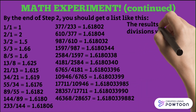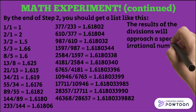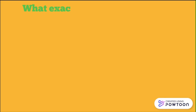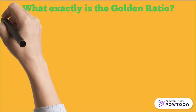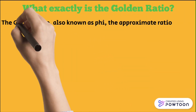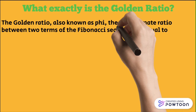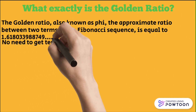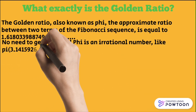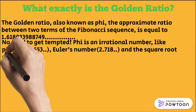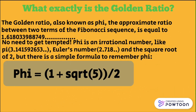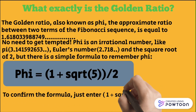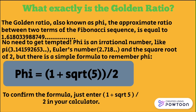The results of the divisions will approach a specific irrational number called the golden ratio. What exactly is the golden ratio? The golden ratio, also known as phi, is the approximate ratio between two terms of the Fibonacci sequence and is equal to 1.618033988749 and so on. Phi is an irrational number like pi, Euler's number, and the square root of 2. But there is a simple formula to remember phi: phi is equal to 1 plus the square root of 5, all divided by 2. To confirm the formula, just enter 1 plus square root 5 divided by 2 in your calculator.